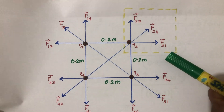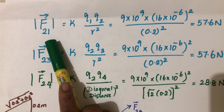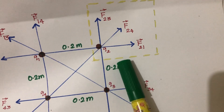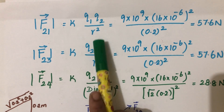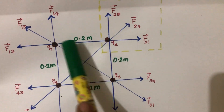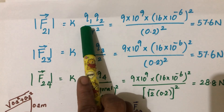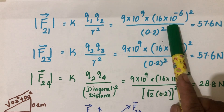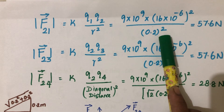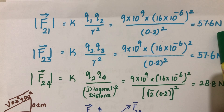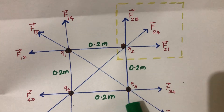Let's calculate F21 first — the force on q2 due to q1. Using Coulomb's law: F = k·q1·q2 / r². Here, r = 0.2 m everywhere. k = 9 × 10⁹, and both q1 and q2 equal 16 × 10⁻⁶ C, so we square that value. The distance is 0.2 m squared — do not forget to square this term. You will get 57.6 newtons.